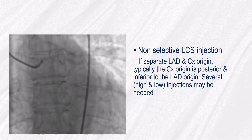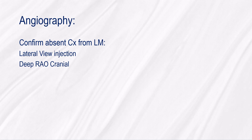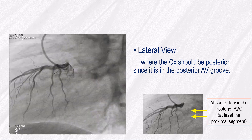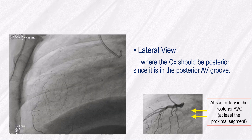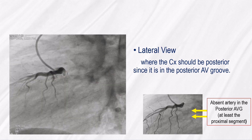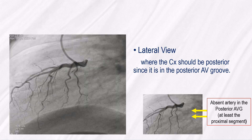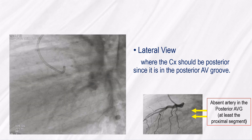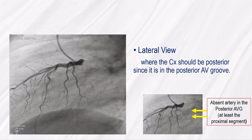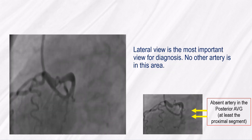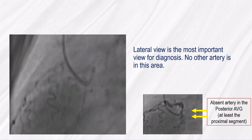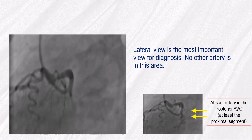Several injections may be needed. To confirm the absence of CX from the left main, we need a lateral and deep RAO cranial view. In the lateral view, the CX should be posterior since it is in the posterior AV groove — at least the proximal segment in a non-dominant CX. So the lateral view is the most important view for diagnosis.